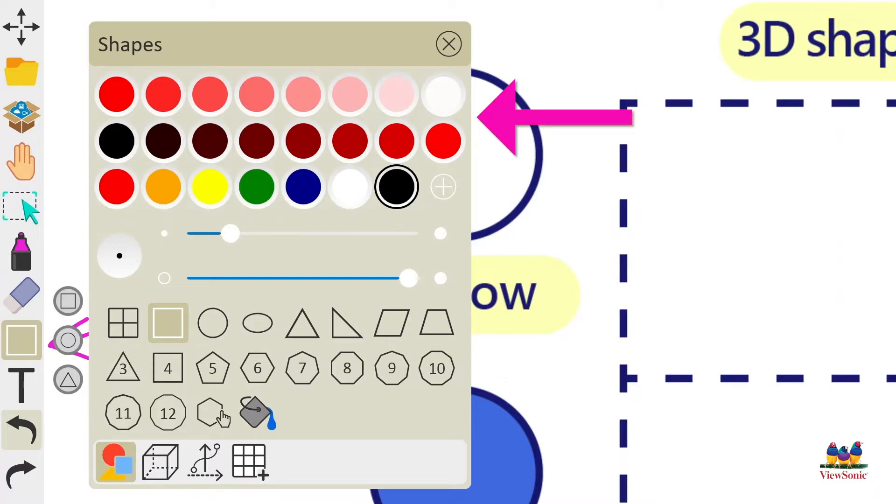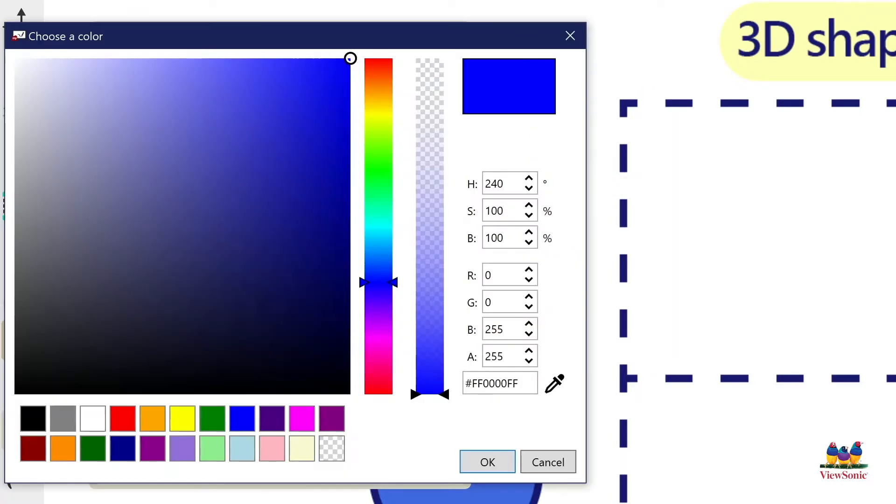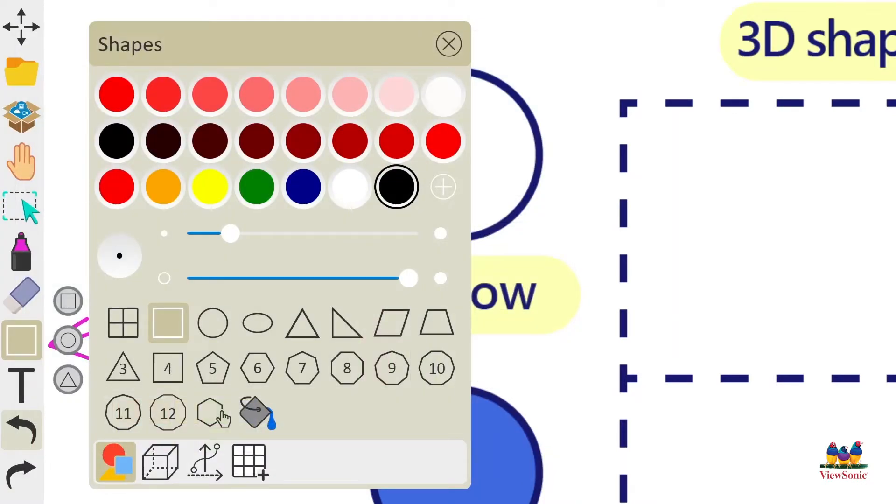At the top you're going to see different colors that you can choose for your shape, just like the pen tool, or you can click the plus icon on the right side of the colors. This will open up the advanced color menu so you can choose more advanced colors. Choose your color and then choose OK to activate that color.